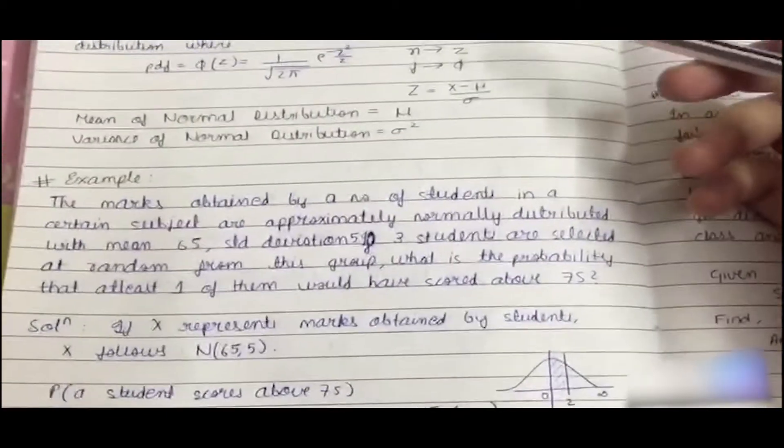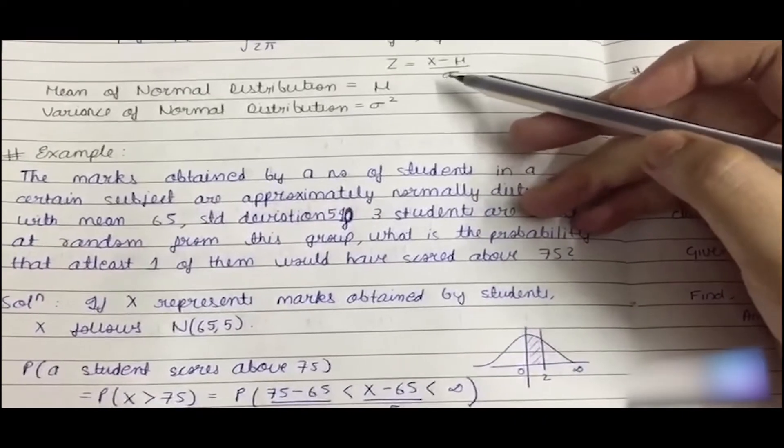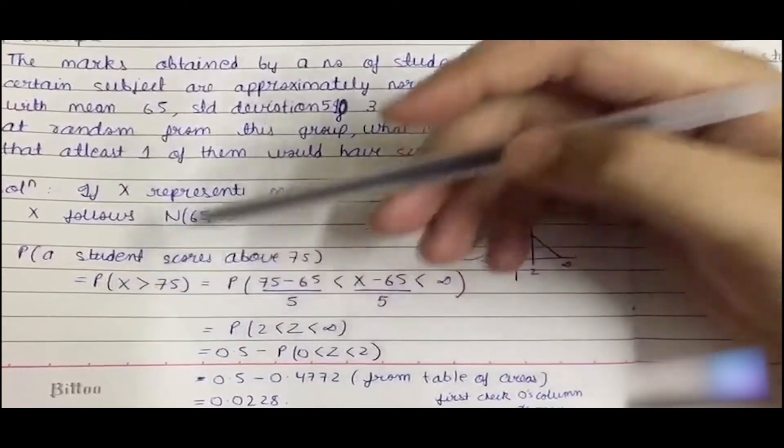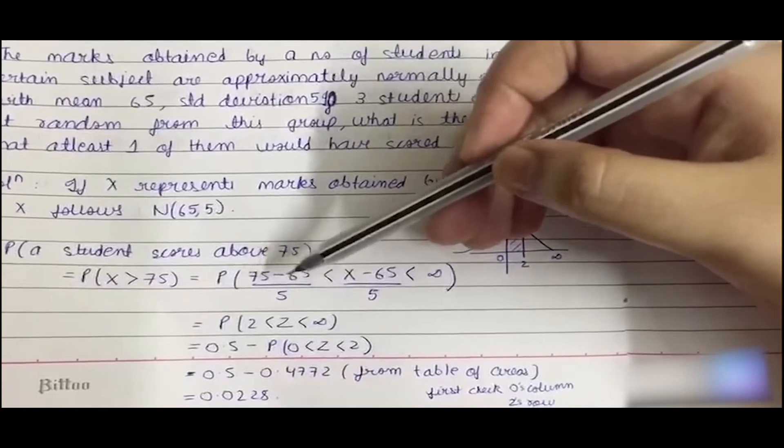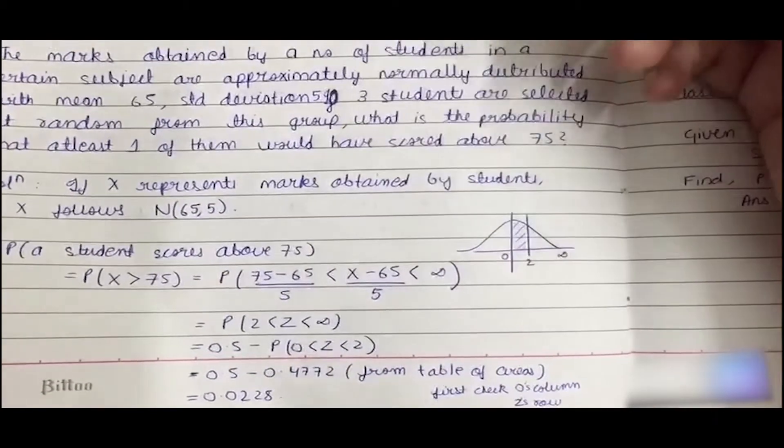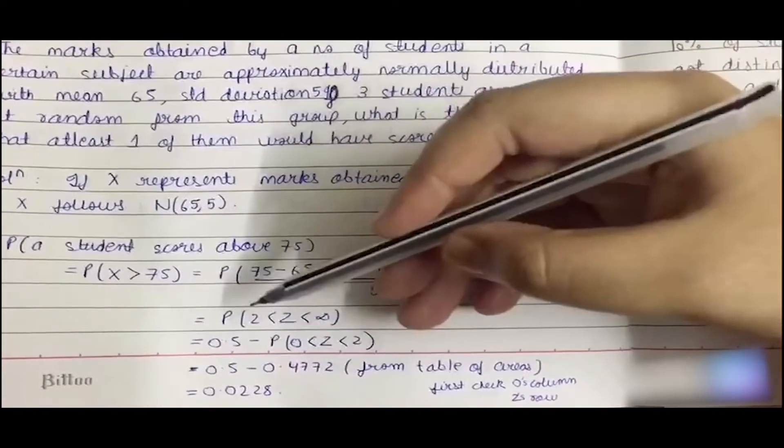We had seen above that we replace z with (x minus mu) divided by sigma. So in this, since X was greater than 75, we have written that z is greater than 75 divided by 5 but less than infinity. We applied that change of origin and got P(z greater than 2 but less than infinity).